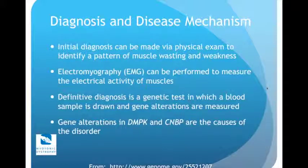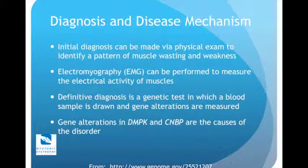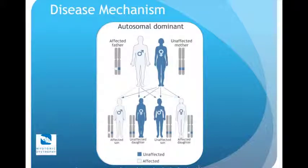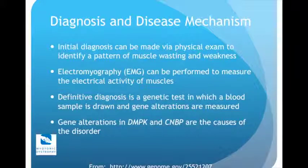The initial diagnosis can be made by a physical exam to identify a pattern of muscle wasting and weakness. An EMG can be performed to measure the electrical activity of muscles, because myotonic dystrophy is a neuromuscular disorder with defects associated with muscles. A definitive diagnosis is a genetic test in which a blood sample is drawn and gene alterations are measured — specifically sequencing segments of the genome to see if you have alterations in two genes: DMPK, dystrophia myotonica protein kinase, or the CNBP gene, cellular nucleic acid binding protein. Mutations in CNBP cause myotonic dystrophy type 2, while mutations in DMPK cause myotonic dystrophy type 1.